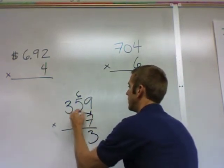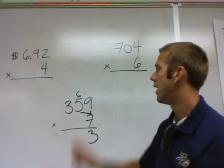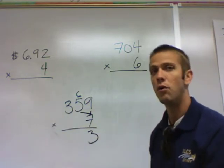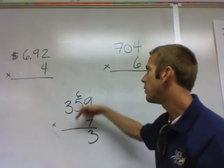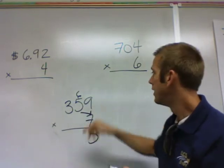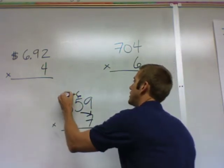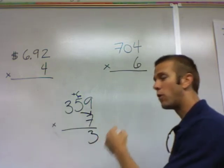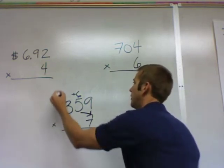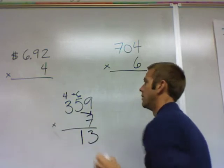Then you go on to the tens. Seven times five is 35. You multiply the first number, then you add the extra. So seven times five is 35, plus six is 41. So you place a one, four, forty-one.